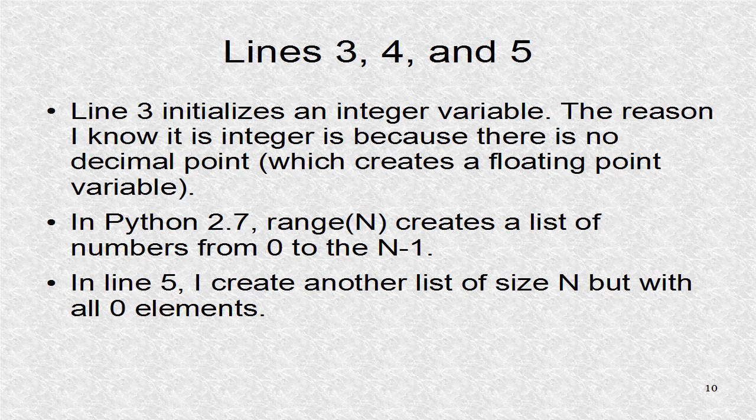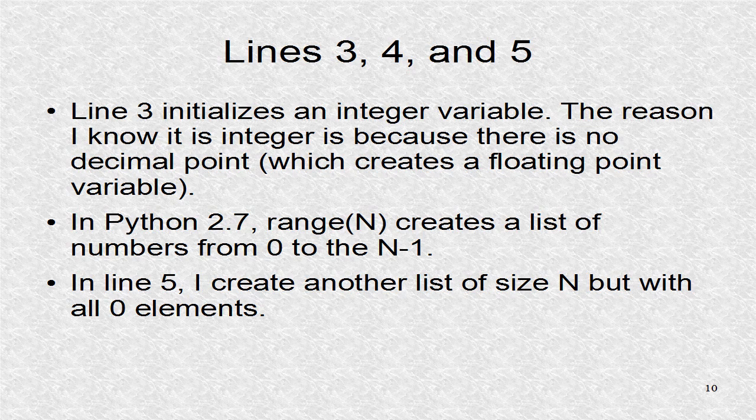Next we create three variables. One is integer n equal to one period, that is 168. X is a list from 0 to 167, and is created by the range function. Finally we create the y variable. It has 168 elements, and all are 0.